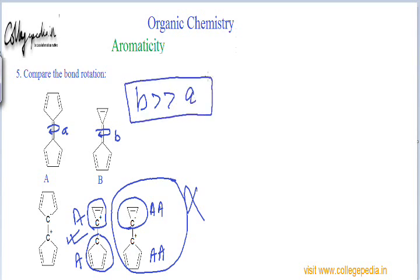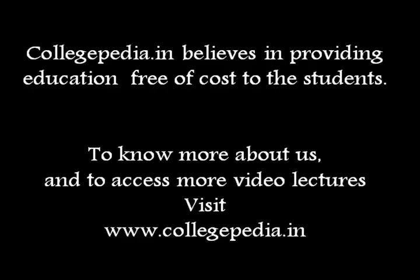In summary, bond B has much higher bond rotation than bond A because breaking the pi bond at B aromatizes both rings, making the single bond character dominant at that position. Thank you.